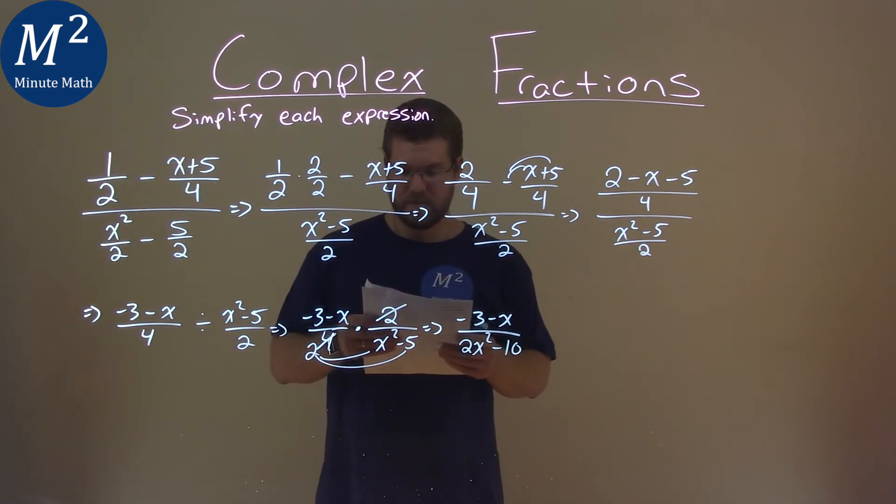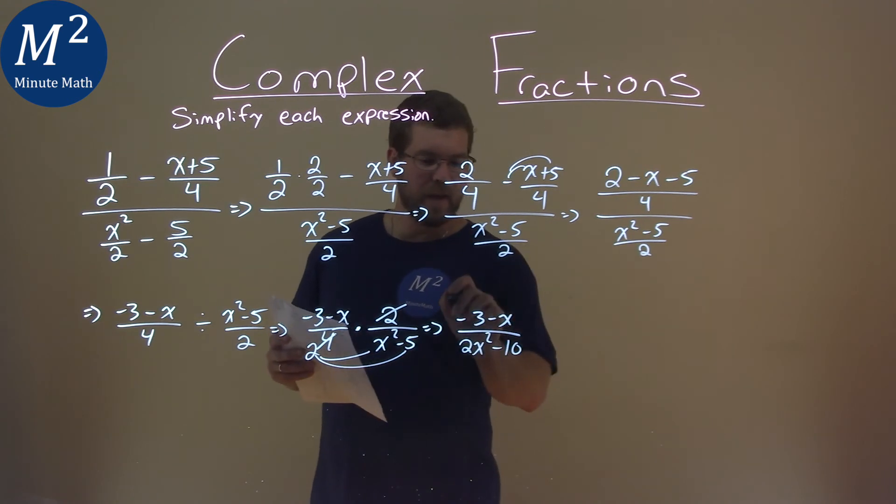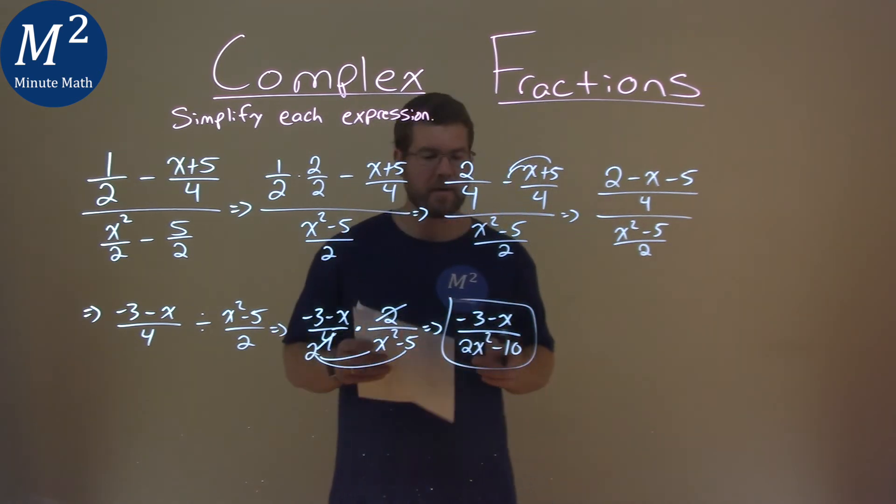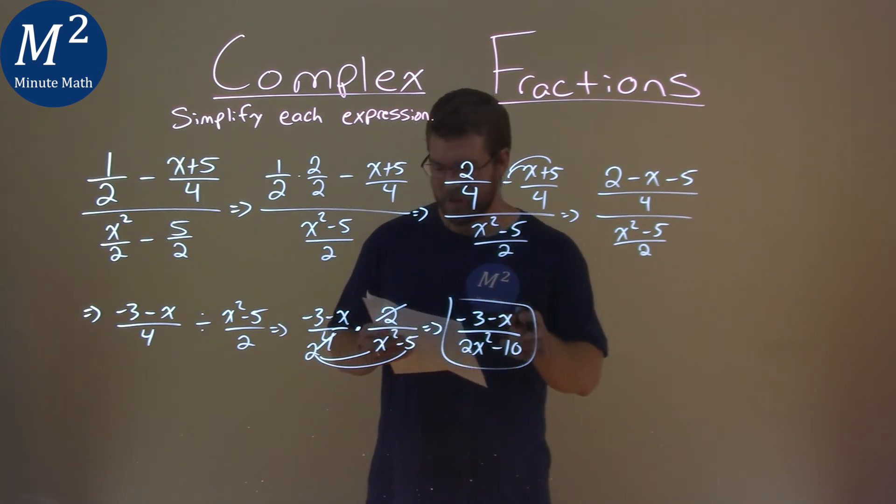And that's it. We're basically there. Our final answer here is negative 3 minus x over 2x squared minus 10.